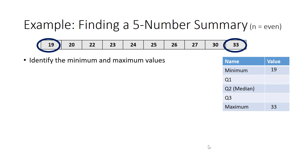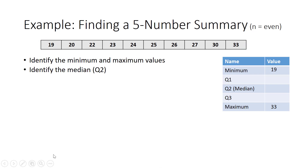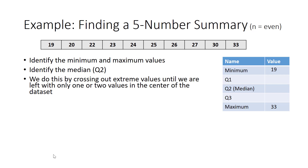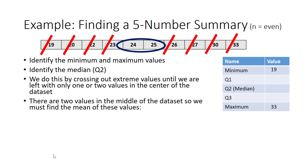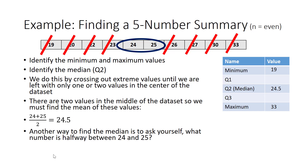We often organize our five-number summary in a table. Now we need to identify the median, or Q2. One way to do this is by crossing out extreme values until we are left with one or two values in the center of the data set. In this case, we have two values in the middle, so we find their mean by adding 24 and 25 and dividing by 2. We find that the median is 24.5.